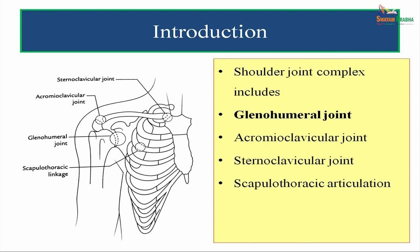Introduction to shoulder joint. The shoulder joint is one of the most movable and most important joints in the human body. The shoulder joint is only a part of the shoulder joint complex, which includes the glenohumeral joint (the shoulder joint), the acromioclavicular joint, the sternoclavicular joint, and the scapulothoracic articulation. In today's session, we are going to discuss only the shoulder joint per se.